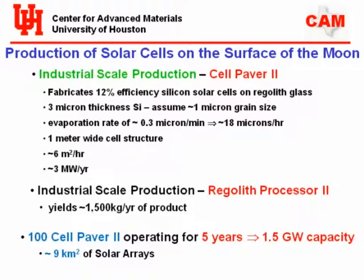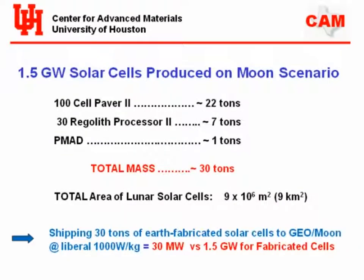This is a five-year operation of cell pavers, assuming at least a five-year lifetime. What's it going to cost to do this? We've estimated about 30 tons of mass. If you take 30 tons of current solar cells, that's about 30 megawatts. With our approach, 30 tons gives you about 1.5 gigawatts — a large factor difference. That 30 tons will cost on the order of seven to nine billion dollars.